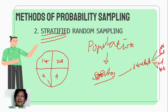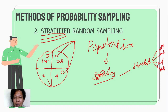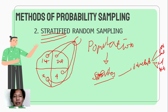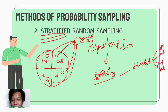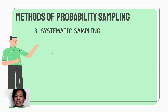Sa stratified random sampling, mula sa isang stratum, mag-random sampling ka — with or without replacement — at gagawin mo ito sa lahat ng stratum. Yung makakalambod sa lahat ng stratum mo, yun yung bubuo ng iyong sample. Kumbaga, sa lahat ng stratum meron kang representative. Pero dapat yung pagkukuha mo ng part sa bawat stratum ay randomized pa rin — gagamit ka pa rin ng random sampling.